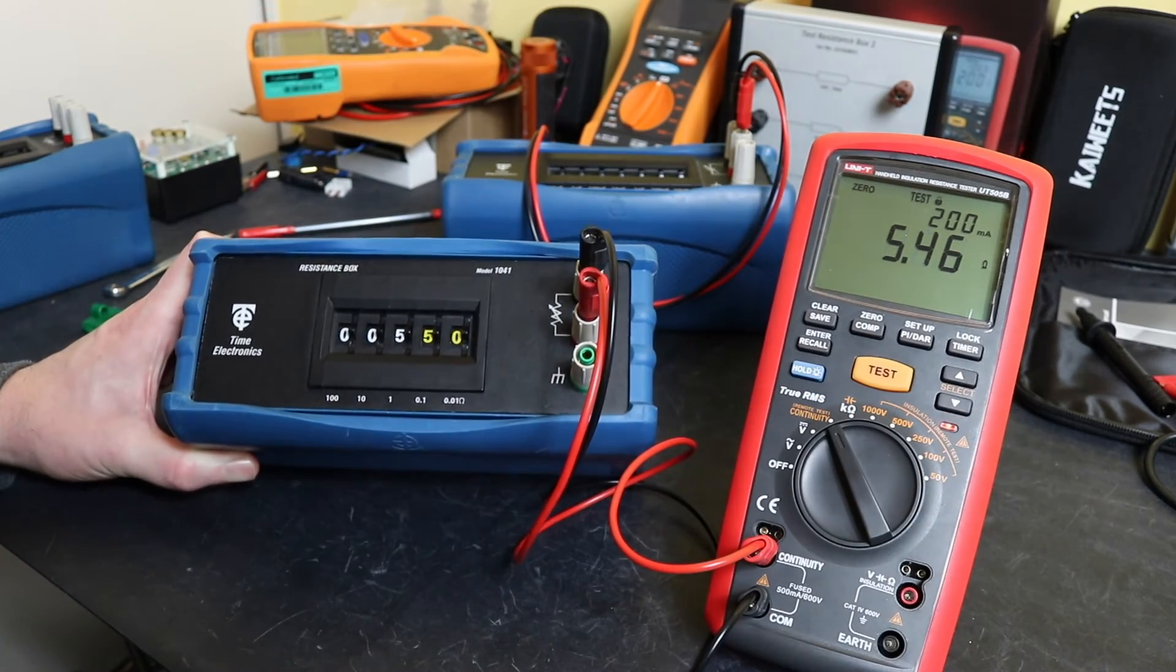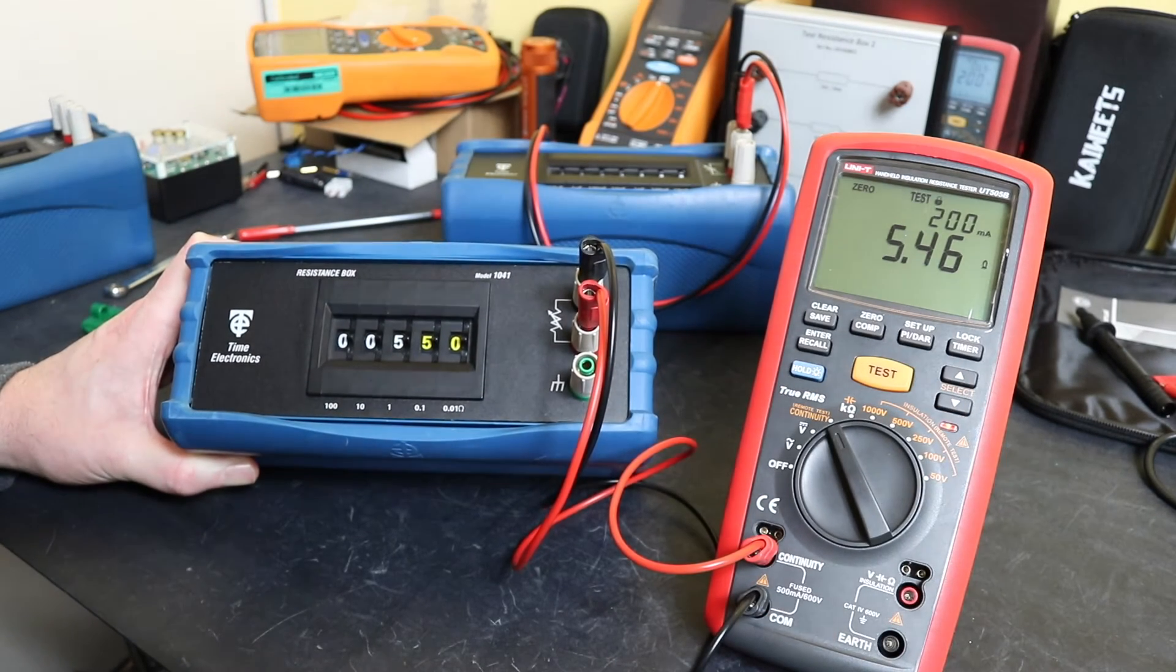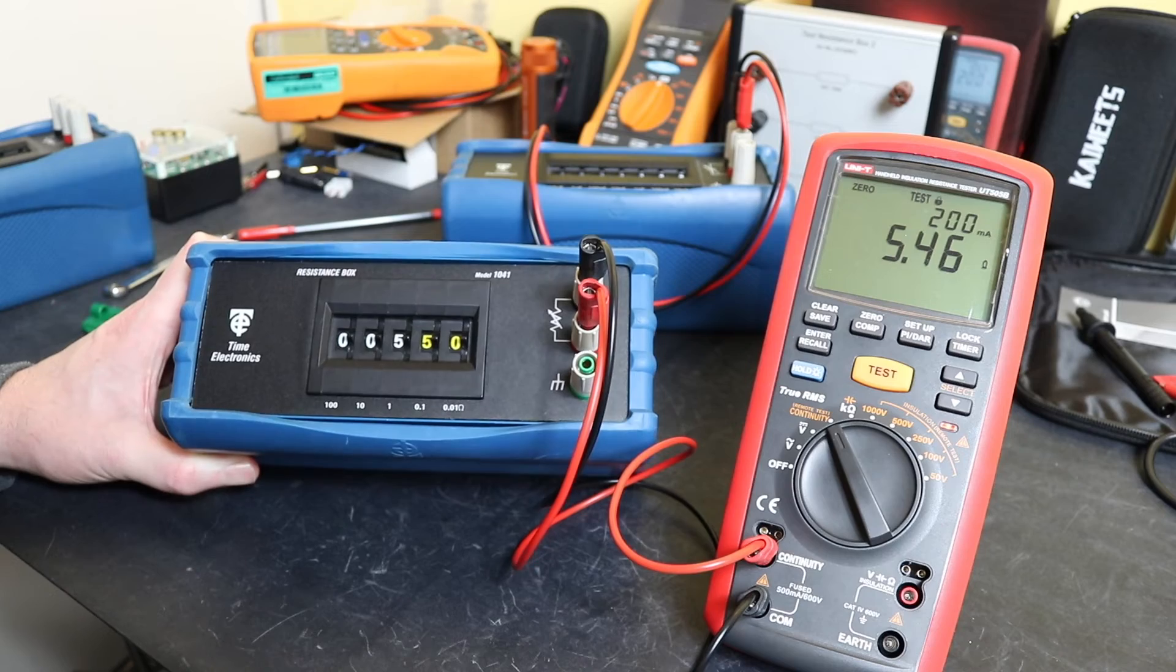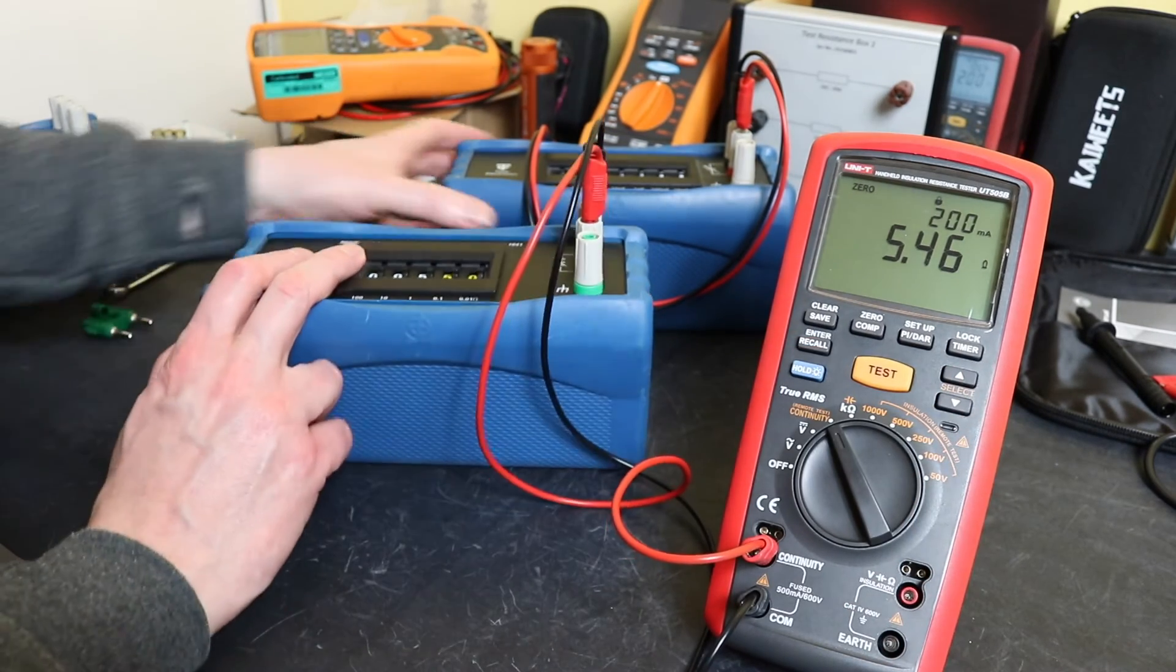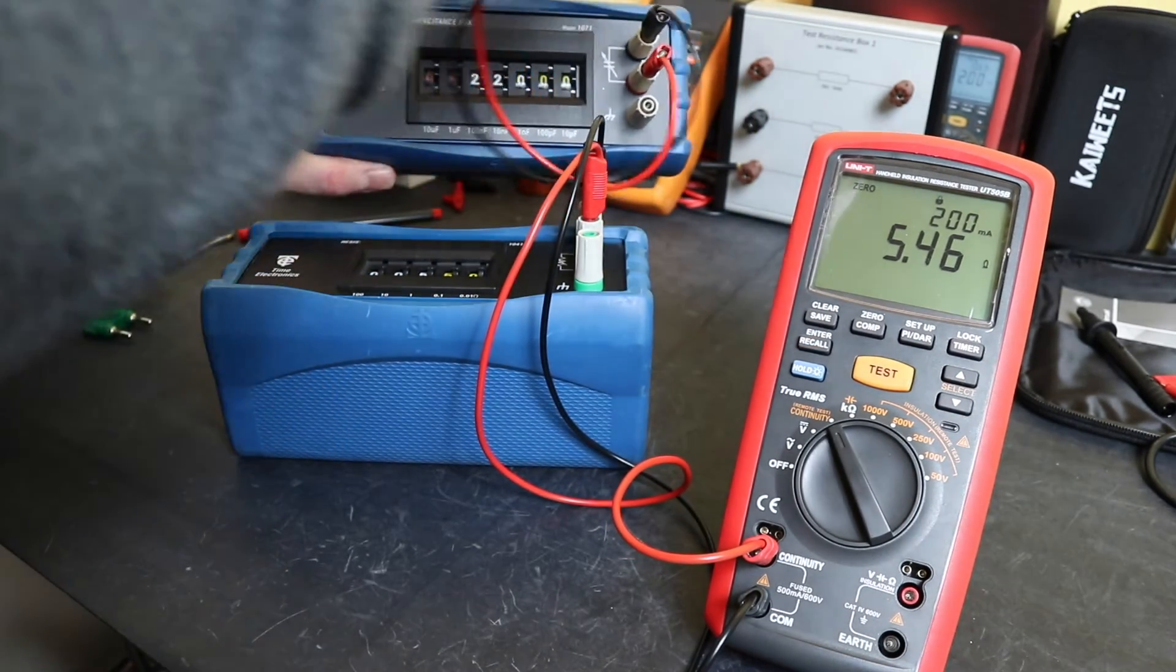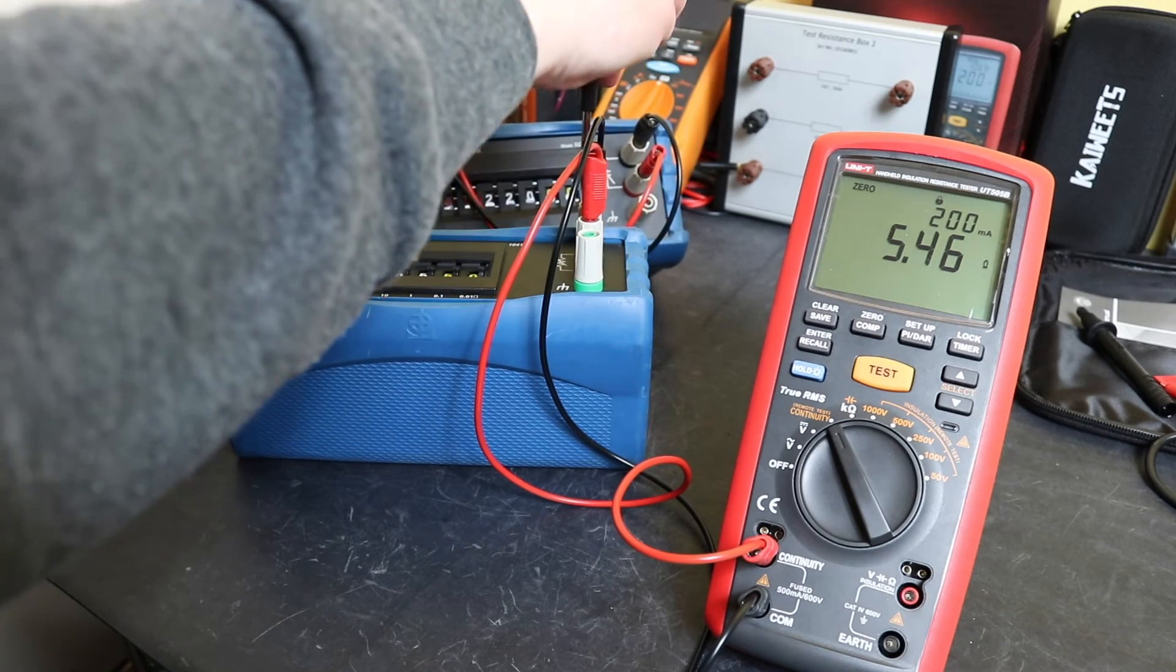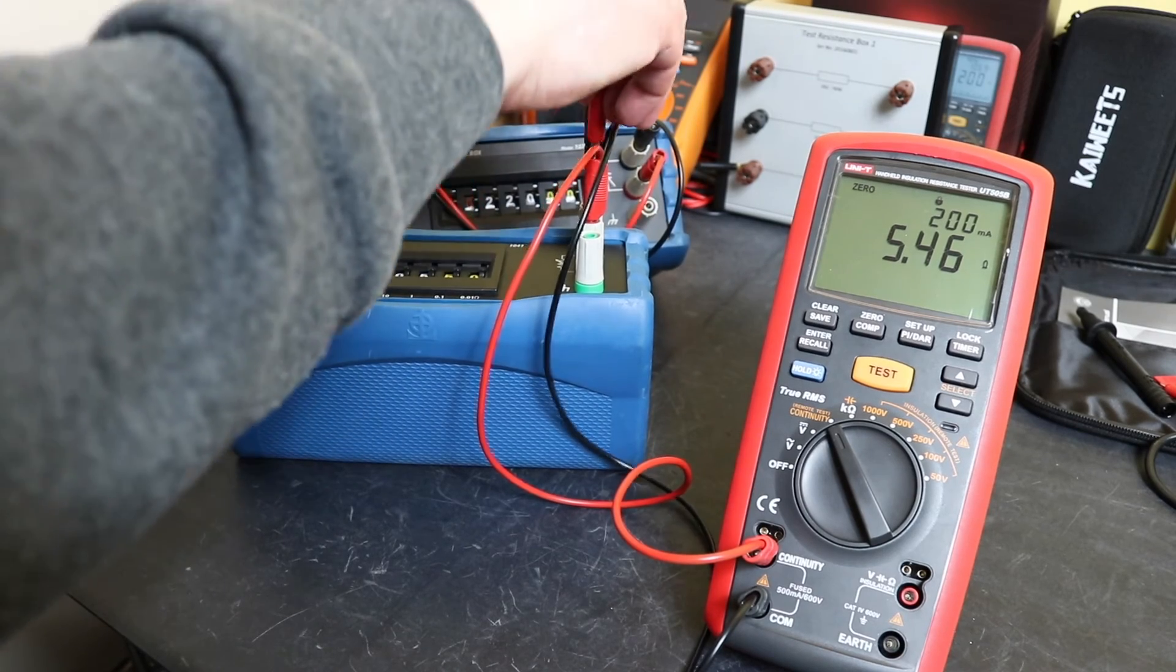We'll just show you 5.5. So we've set up to 5.5, hit my test button, and you can see I've got a reading there, 5.46, which is within tolerance.